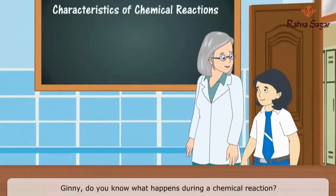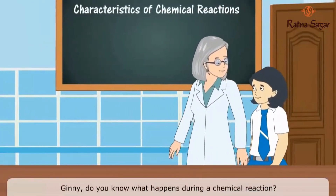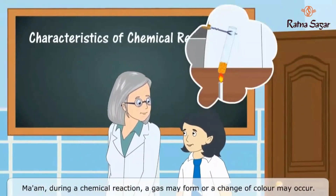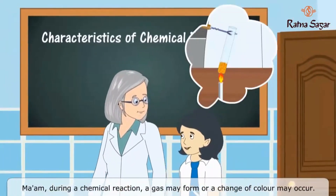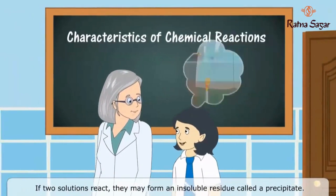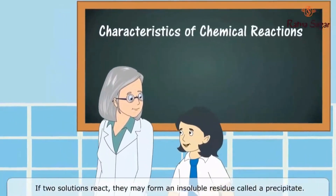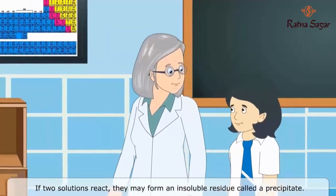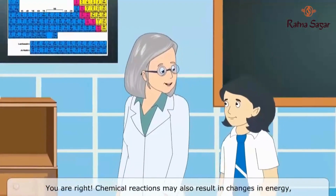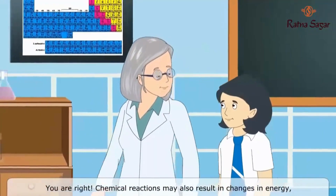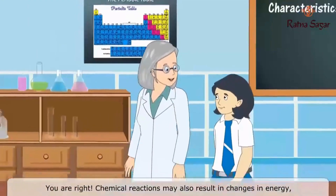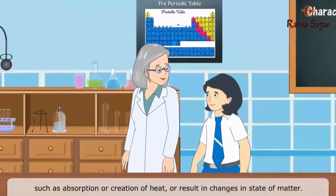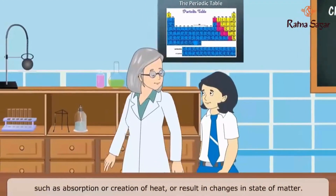Ginny, do you know what happens during a chemical reaction? During a chemical reaction, a gas may form or a change of color may occur. If two solutions react, they may form an insoluble residue called a precipitate. You are right. Chemical reactions may also result in changes in energy such as absorption or creation of heat, or result in changes in state of matter.